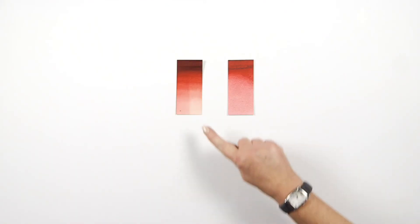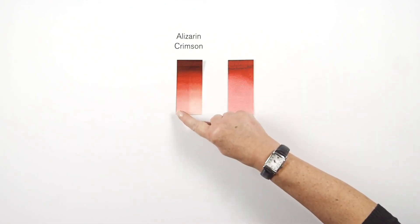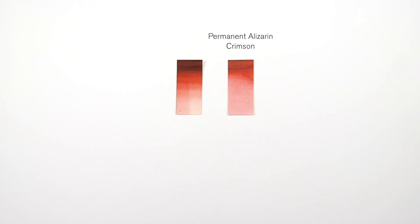As you can see the true alizarin crimson has faded significantly over its time in the test chamber whereas the permanent alizarin crimson as the name suggests shows no fading over the same exposure period.